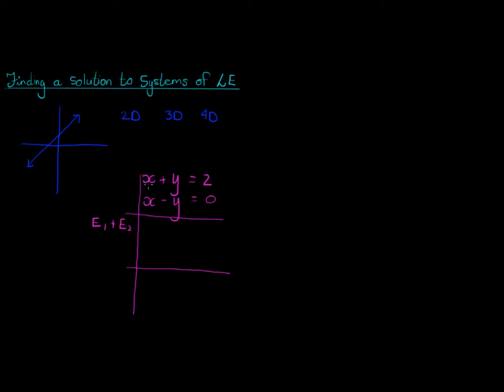I'll have x plus x is 2x, and plus y minus y will give me 0. 2 plus 0 is 2. Or I can also subtract the two equations. I can say equation 1 minus equation 2. And this time I'll have x minus x will give me 0.